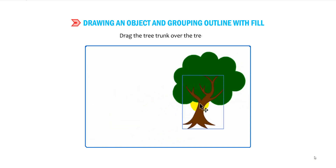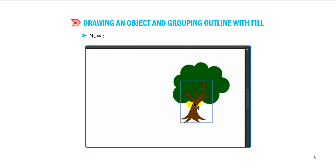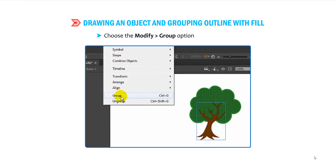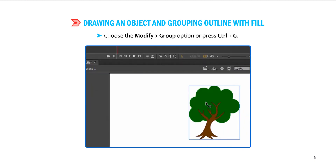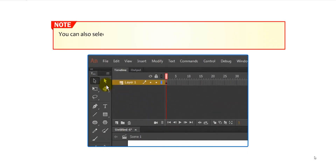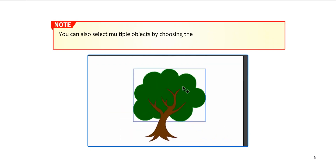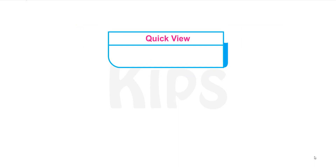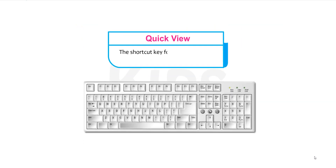Drag the tree trunk over the tree top. Now select the complete tree by dragging the mouse around it. Choose Modify, then go to Group option, or press Ctrl+G. You can also select multiple objects by choosing the Selection tool, holding down the Shift key and clicking on the objects. The shortcut key for the Pencil tool is Shift+Y, and for the Selection tool is V.